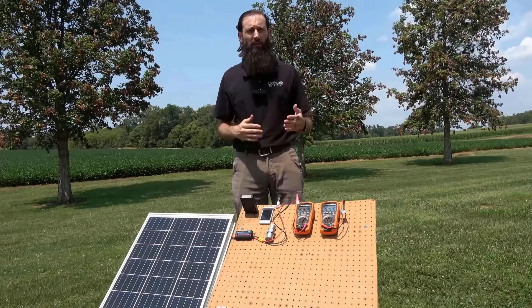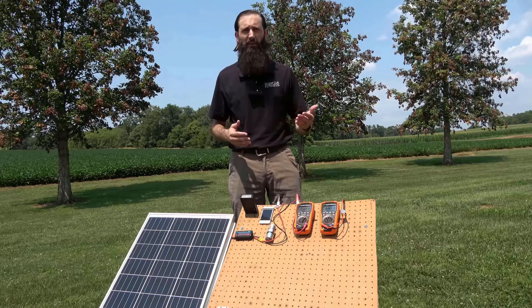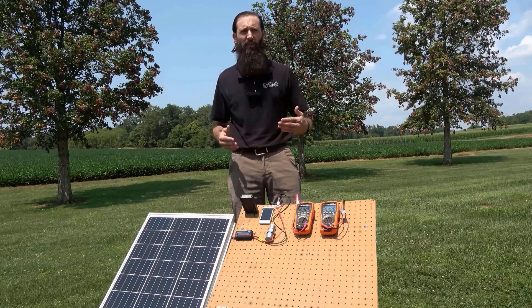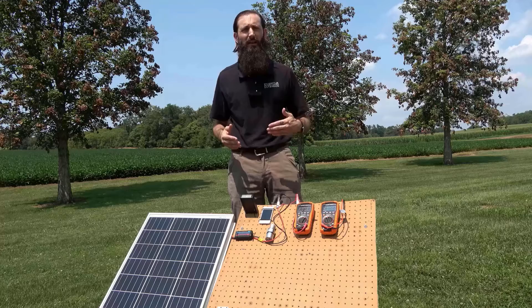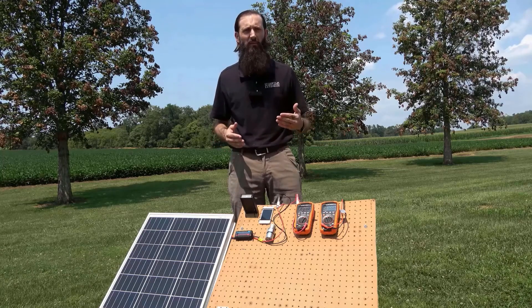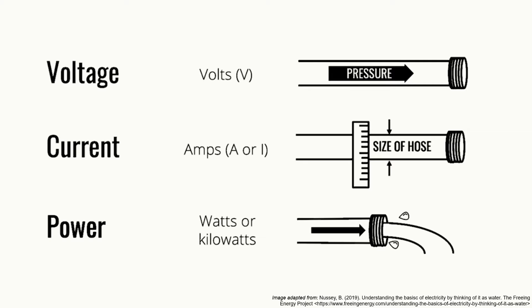The terms voltage, current, and power all describe how electricity flows through a conducting wire, but each represents a different aspect of that electrical flow. An analogy between flowing electricity and flowing water can be useful in understanding each of these electrical parameters. With this analogy, an electrical force can be transmitted through a conducting wire, just as water can flow through a garden hose. So voltage is like the pressure that pushes water through the hose, current is like the flow rate of the water in the hose, and power is the total amount or volume of water that's flowing in the hose at a given time.